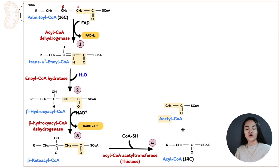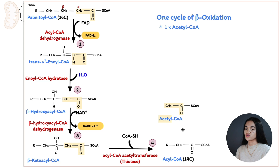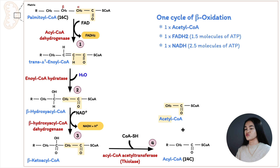For one cycle of beta-oxidation, we produce one molecule of acetyl-CoA and two pairs of electrons in the form of 1 FADH2 and 1 NADH. FADH2 is equivalent to 1.5 molecules of ATP, and NADH is equivalent to 2.5 molecules of ATP. Keep that in mind when we calculate the ATP yield later.